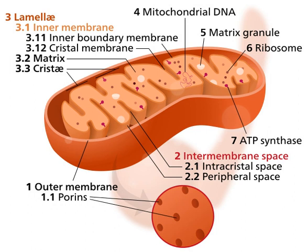A crista, plural cristae, is a fold in the inner membrane of a mitochondrion. The name is from the Latin for crest or plume, and it gives the inner membrane its characteristic wrinkled shape, providing a large amount of surface area for chemical reactions to occur on.